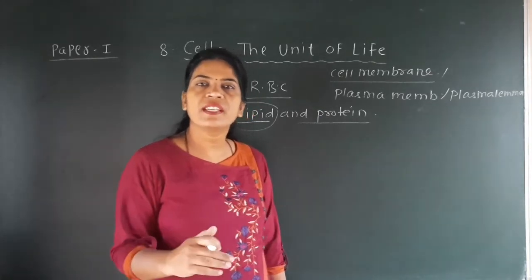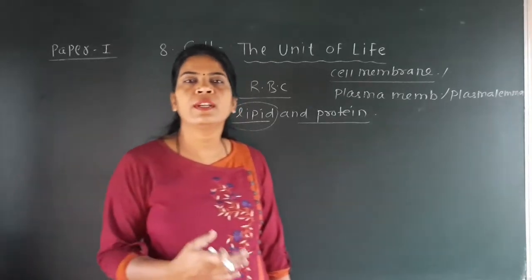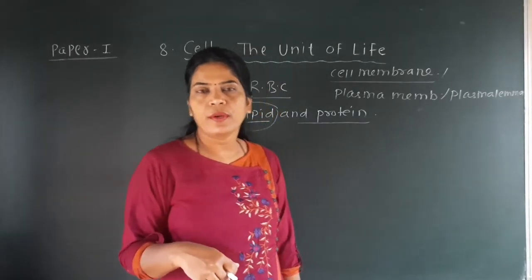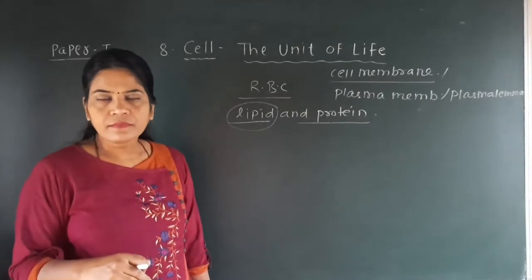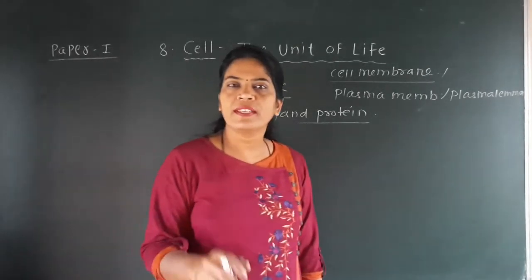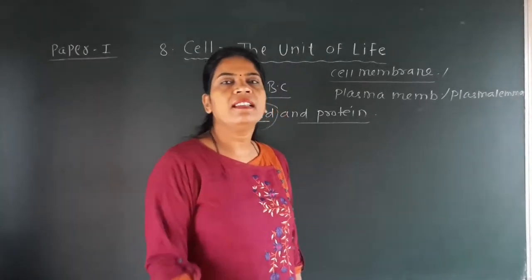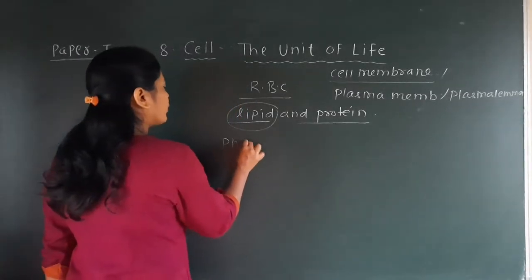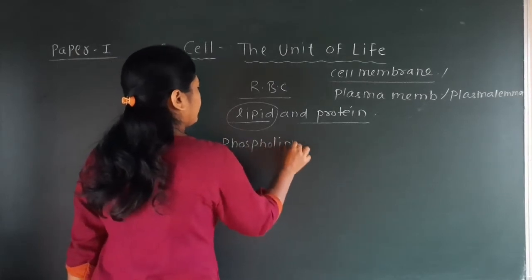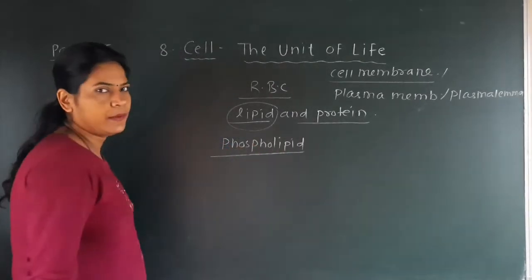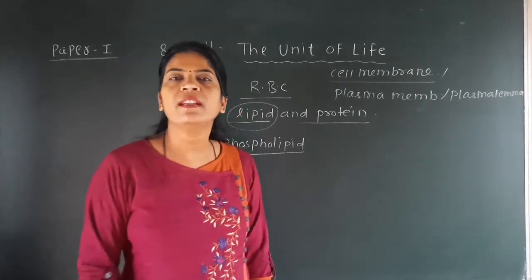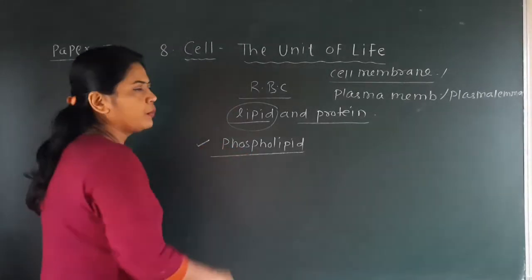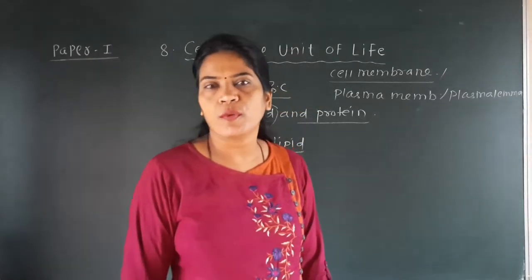In our regular diet we take lipids, proteins, and carbohydrates. Lipid is a macromolecule which has an oily or greasy consistency. The major type of lipid present in the cell membrane is called phospholipid. There are three types of lipid: triglycerides, phospholipids, and sterols. Out of these three types, the major lipid present in the cell membrane is phospholipid.